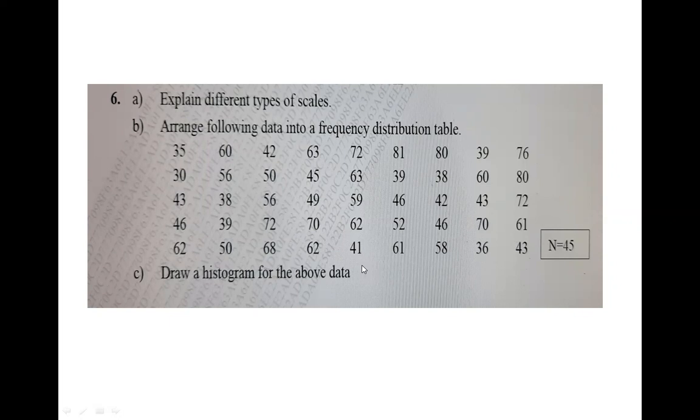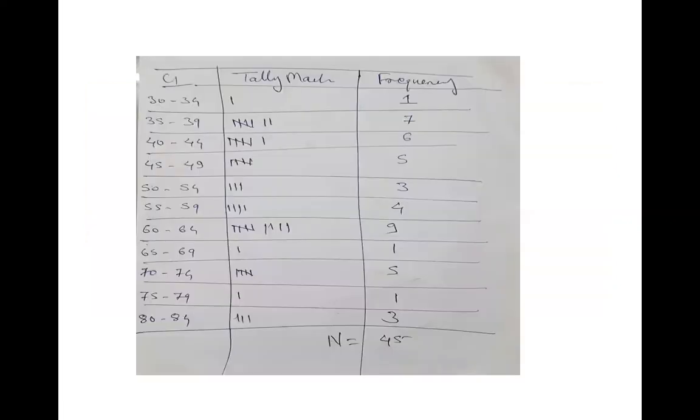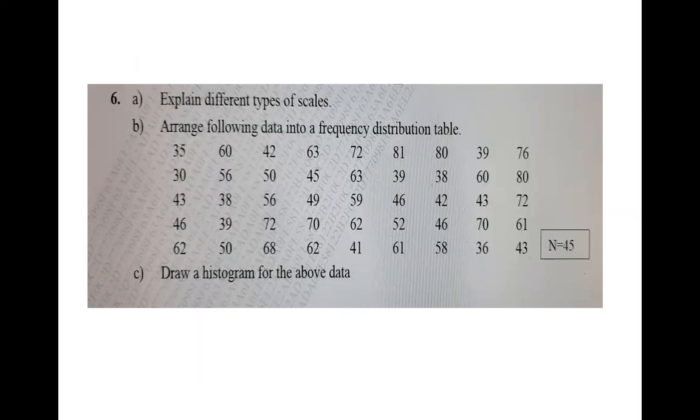So what is the process? First, you have to see what is the lowest number and what is the highest number in this given data. You have to observe - you'll find the lowest is 30 and the highest is 81.